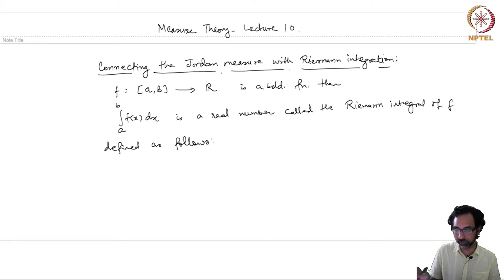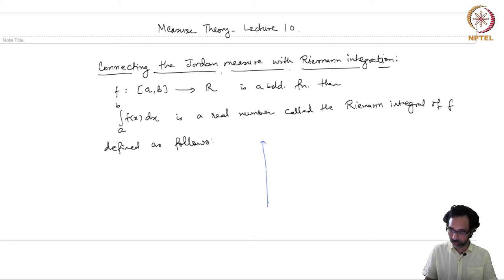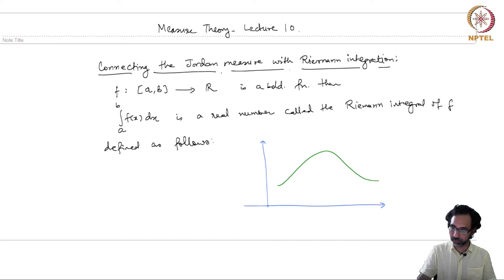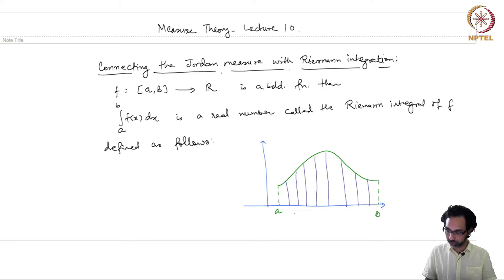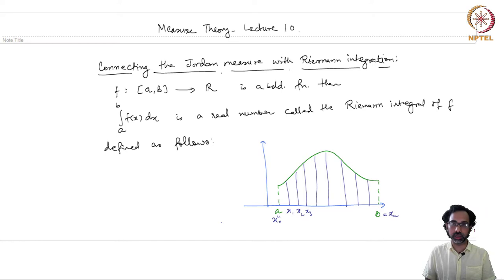I am going to give a brief recall of the original definition of the Riemann integral. The intuition is pretty straightforward: if you have a function between points a and b, you can partition this interval a, b into subintervals of possibly different lengths. So here you have points x_0 equal to a, then x_1, x_2, x_3, and so on, with b equal to x_n — giving n+1 points dividing the segment a, b into subintervals.